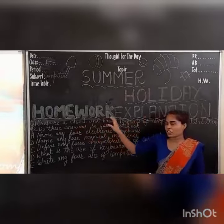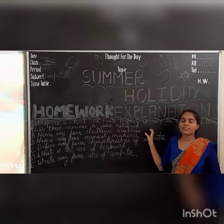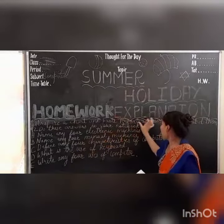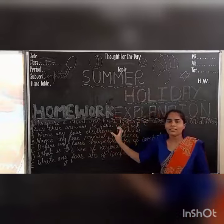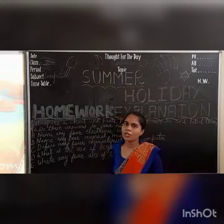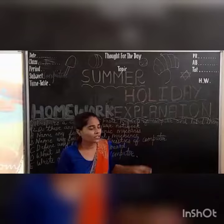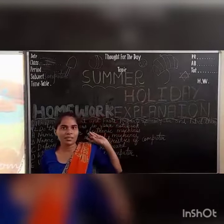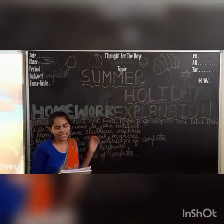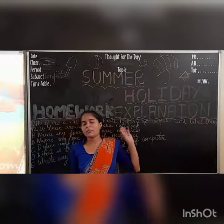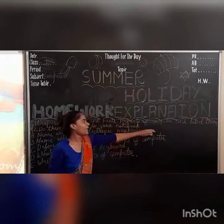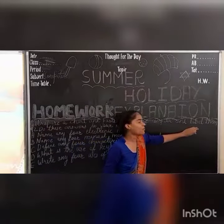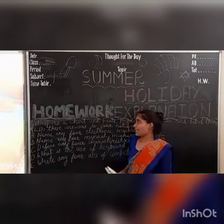You can take pictures of computer parts and paste them, or you can draw them as well. The 10 parts include: keyboard, CPU, mouse, monitor — that's four. The remaining ones from class include printers, scanner, speaker, joystick, microphone, hard disk, etc. Paste them on a size sheet and label each one, meaning simply write their names.